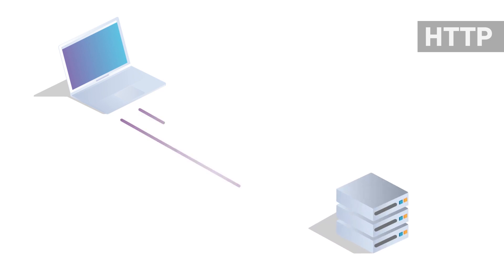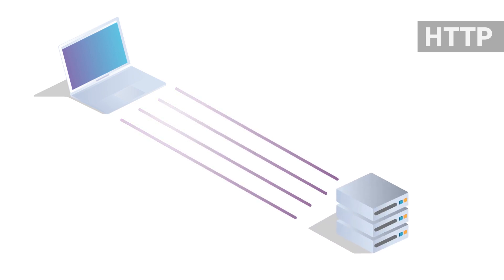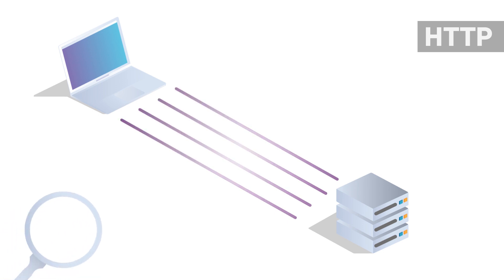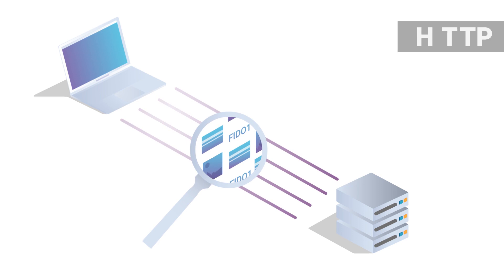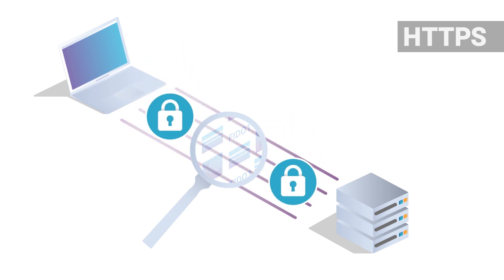Hypertext Transfer Protocol, or HTTP, is the standard process in which data is transferred for presenting information over the internet. But HTTP has a major weakness: HTTP requests and responses are in plain text, which makes it easy for snoopers to intercept and read. Thankfully, HTTPS resolves this issue. The S stands for secure.